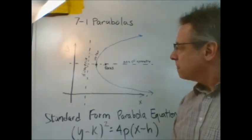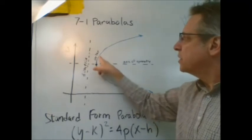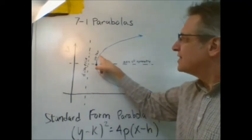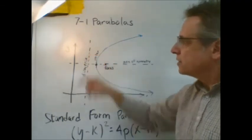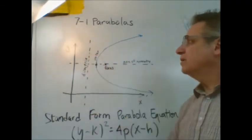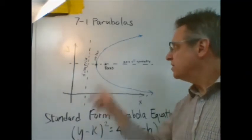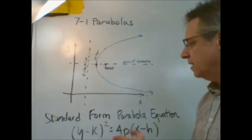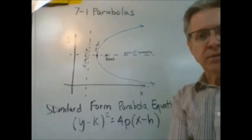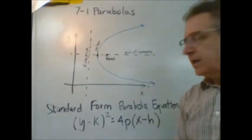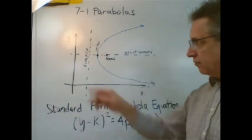So, if we know that the distance between the focus and any point on the curve is the same as the distance from that same point on the curve to the directrix, we can use the distance equation and find an equation for the parabola. And I'm not going to go through all of that for you, but the equation looks like this. This is the standard form for a parabola that opens left and right.